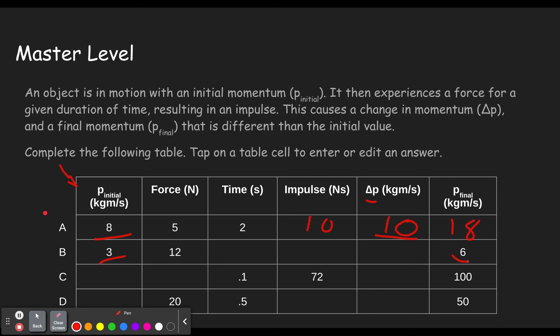Okay, well, if we started with 3 and we ended up with 6, that means we changed by 3, which means we had an impulse of 3. What time would give us an impulse of 3? 0.25 or 1 fourth. 12 times 0.25 gives you 3. This one, let's see, we'll need to do, we've got impulse is 72.